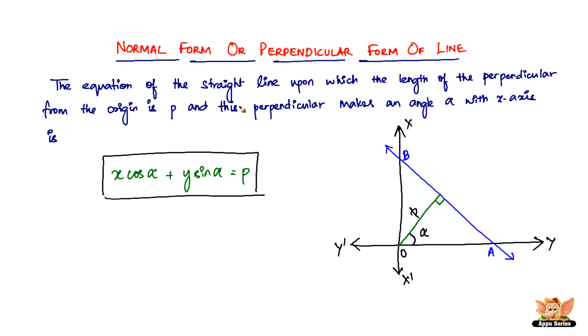Let me read the explanation again with respect to the diagram here. The equation of the straight line AB upon which the length of the perpendicular from the origin—the length is P—and this perpendicular makes an angle alpha with the x-axis.